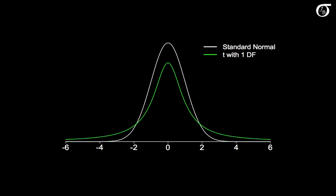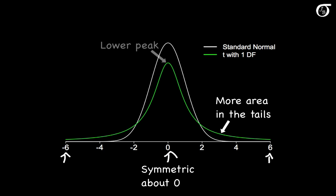The curve in white is the standard normal distribution, and the curve in green is the t-distribution with 1 degree of freedom. I've truncated the plot here at minus 6 and 6, but the possible values do go off toward positive infinity and minus infinity. Like the standard normal distribution, the t-distribution is symmetric about 0, but the t-distribution has heavier tails, meaning more area in the tails, and it has a lower peak.